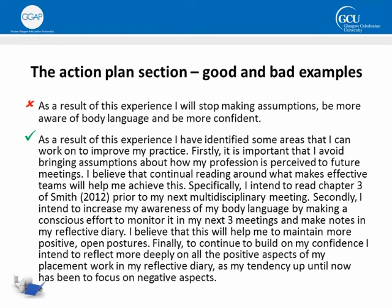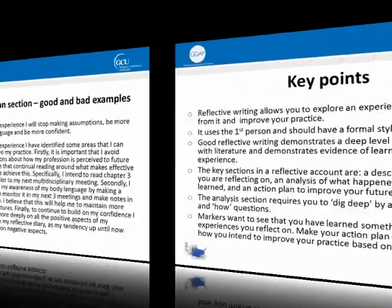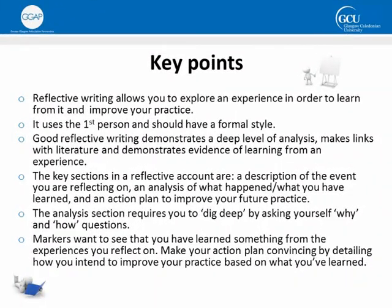Once you've written the action plan, you've completed the Gibbs cycle. The key points of this tutorial are: reflective writing allows you to explore experience in order to learn from it and use that learning to improve your practice. Reflective writing uses the first person or 'I', and it should have a formal style just like any other piece of academic writing. Good reflective writing demonstrates a deep level of analysis, it makes links with the literature, and it demonstrates evidence of learning from an experience.